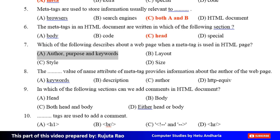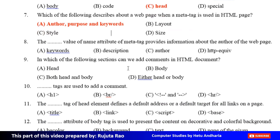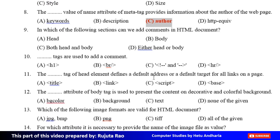Ninth MCQ: The dash value of the name attribute of Meta tag provides information about the author of the web page. Option A: Keywords, Option B: Description, Option C: Author, Option D: Http-Equiv. The correct answer is Option C, Author.